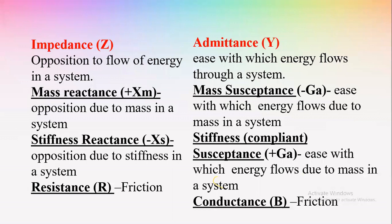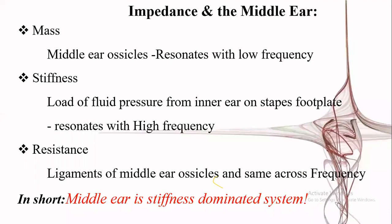In the middle ear, mass is contributed mainly by the middle ear ossicles, stiffness by the load of fluid pressure from the inner ear on the stapes footplate, and resistance by the ligaments of the middle ear ossicles. The middle ear bones are very tiny and very low in mass, so they do not contribute much to impedance evaluation. Stiffness is dominant because inner ear fluid blocks or restricts movement of the middle ear. So in the normal adult middle ear, the system is mainly stiffness-dominated.